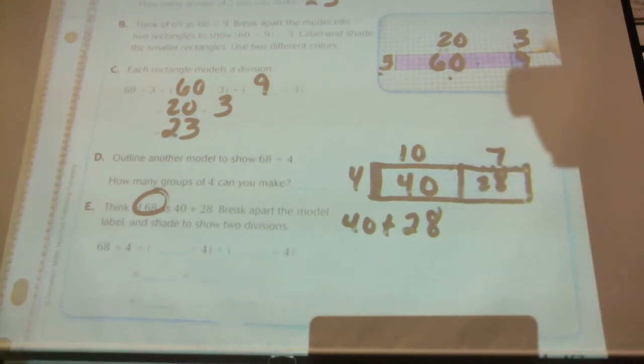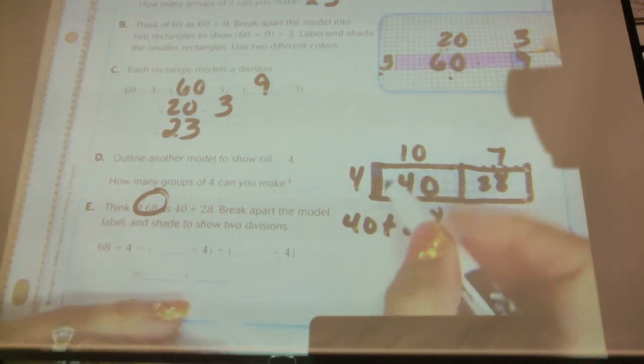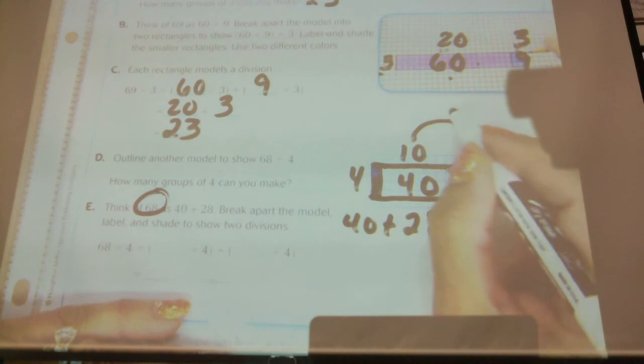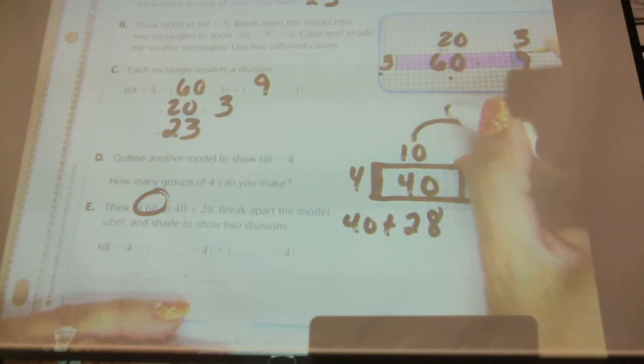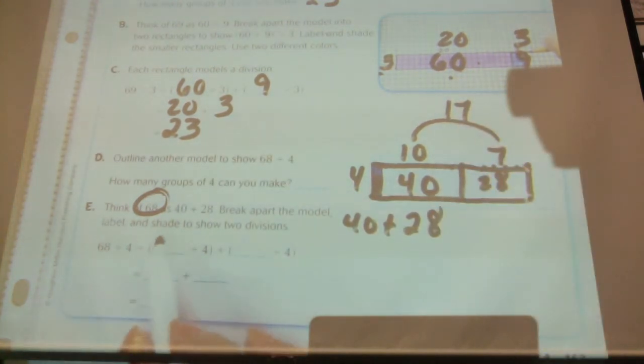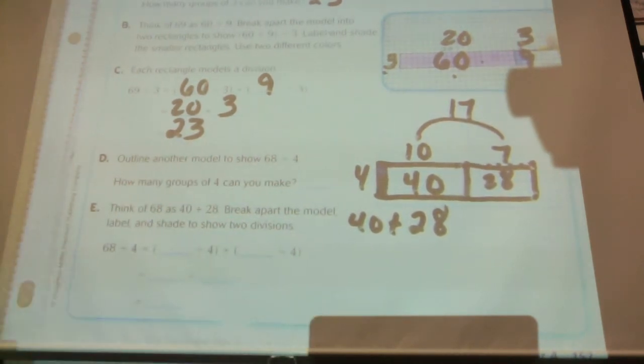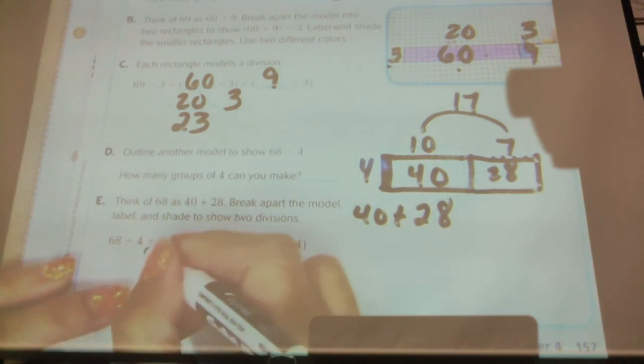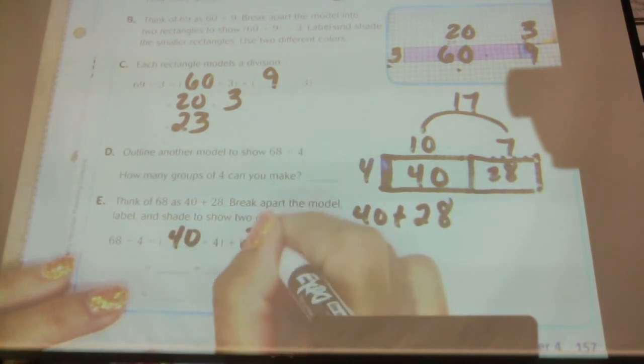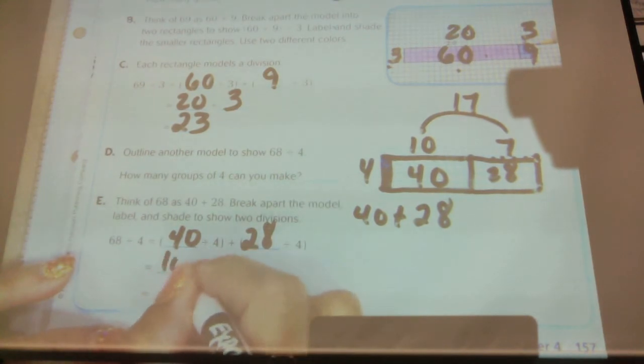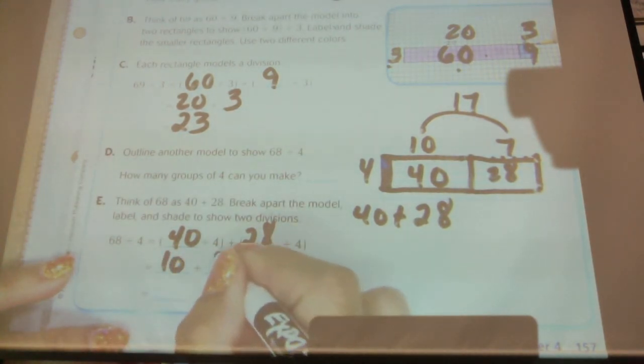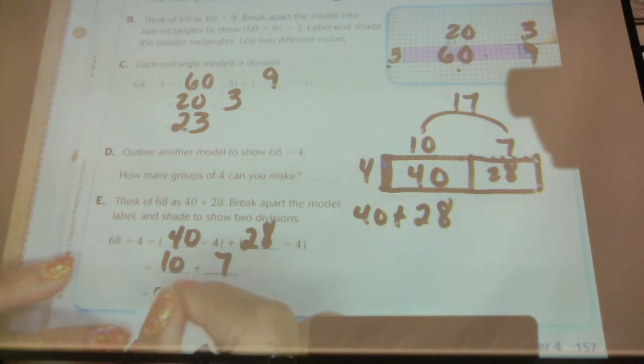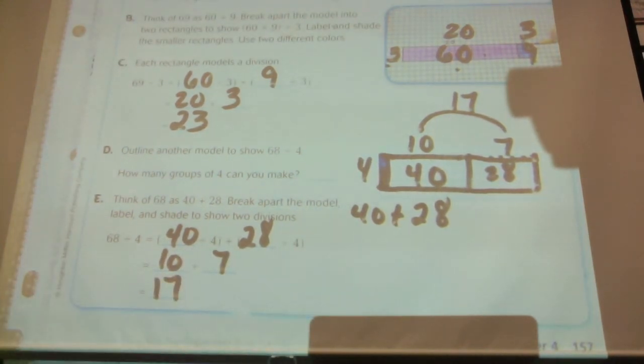And then up here, I'm going to call that 7, because that's how many I went over. So then my answer should be 4 times this number totaled, which equals 17. 4 times 17 equals 68. Here, if we do it this way, we can do 40 and 28. 40 divided by 4 was 10, and 28 divided by 4 was 7. So 10 plus 7 equals 17.